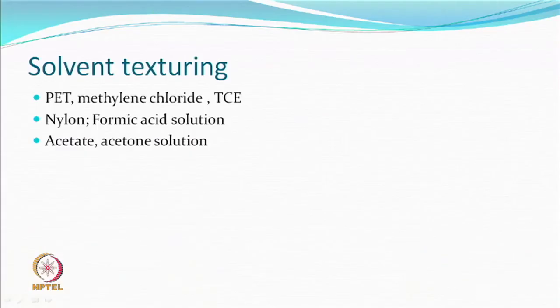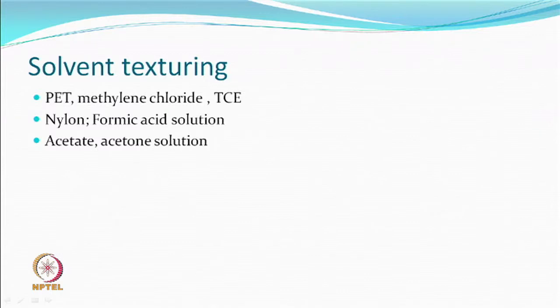Some people did solvent texturing as follows: take the filament, do the twisting, take the lea, put it in a solvent for a certain period of time, remove the solvent either by drying or by a non-solvent, then untwist and you get beautiful effects. Obviously the time required here is not 0.1 or 0.2 seconds — it could be minutes or seconds — but this time can be changed if you increase the temperature.